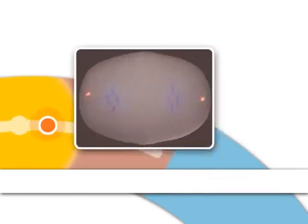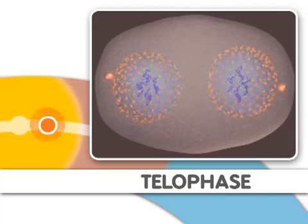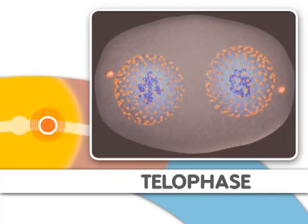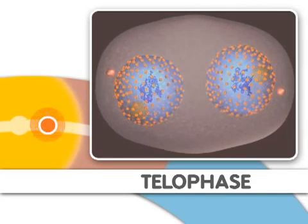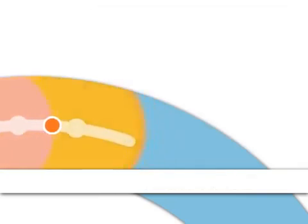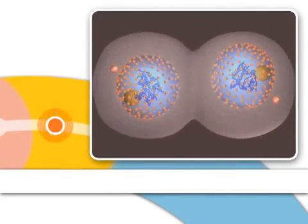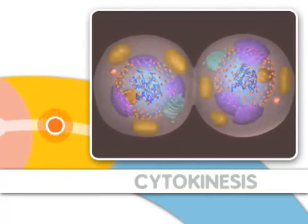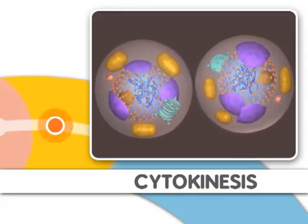Finally, during telophase, nuclear membranes reappear around the two sets of chromosomes. Mitosis is now complete. After mitosis, two new cells are formed by a process called cytokinesis.